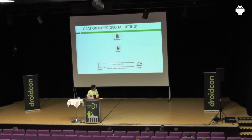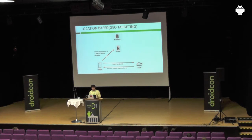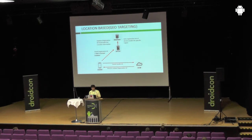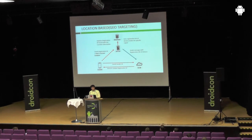Here's how location-based notifications work: we get a registration ID as before, but this time we also send the user's current location, which is easily obtained via a location listener in Android. We update this location information repeatedly as the user moves. When sending a message, we query the database for users inside the specified area, collect those registration IDs, and send them to GCM, which delivers the messages to the appropriate devices.